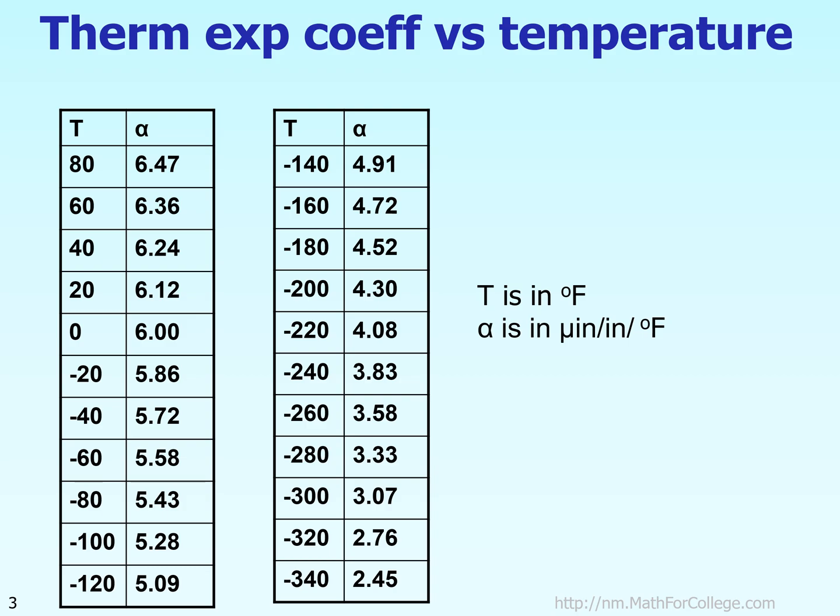Here is a typical example given to us where we're given thermal expansion coefficient as a function of temperature, and there are 22 data points given to us. If 22 data points are given to us, that would make us believe that we can use a polynomial order 21 or less to go through those 22 data points. So the question is, what order of polynomial, which will be 21 order or less, should we be using for regressing to this particular data?